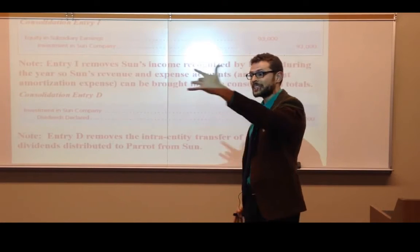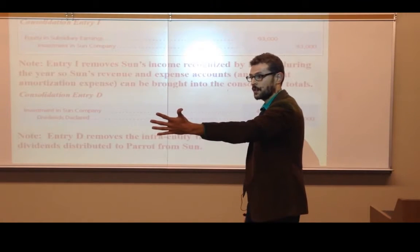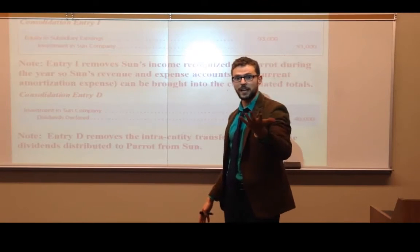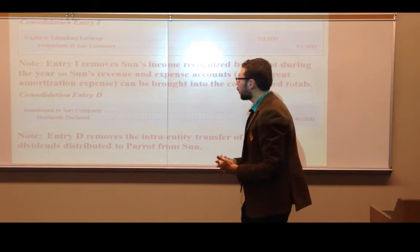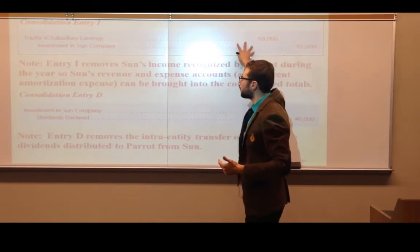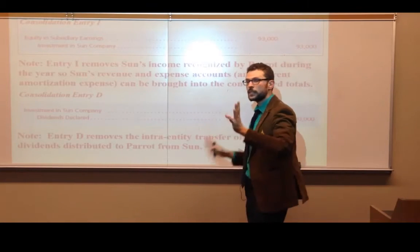$93,000. If you scroll back on the other slide, you'll see why it's $93,000. It's $100,000 in income and $7,000 in amortization of the excess fair values of different assets.